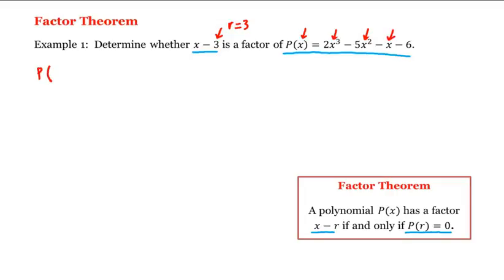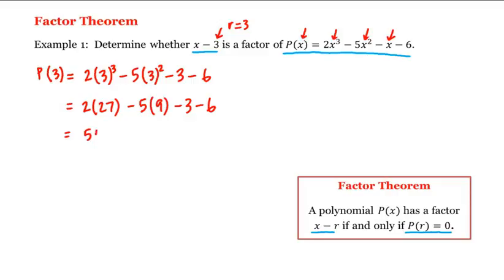Alright, so what is p of 3? This is equal to 2 times 3 cubed minus 5 times 3 squared minus 3 minus 6, which is equal to 2 times 27 minus 5 times 9 minus 3 minus 6, or 54 minus 45 minus 3 minus 6. And 54 minus 45 is 9, and then minus 3 minus 6 is negative 9.